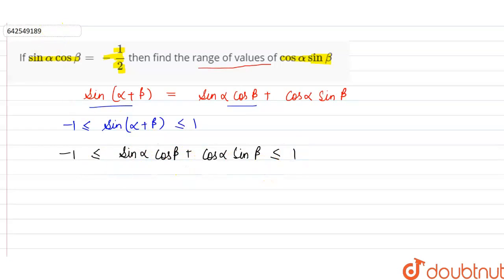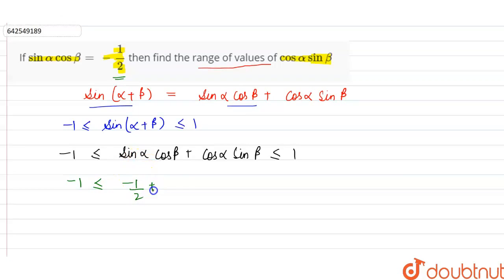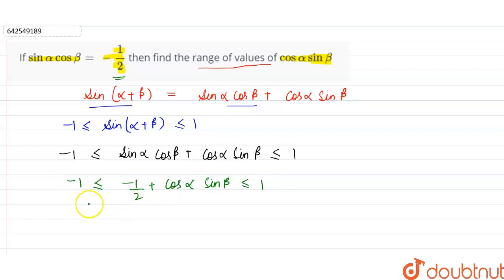We know the value of sin alpha cos beta is given to us, which is minus 1 by 2. So we can say: minus 1 is less than or equal to minus 1 by 2 plus cos alpha sin beta, which is less than or equal to 1. That means minus 1 by 2 plus cos alpha sin beta is greater than or equal to minus 1 but less than or equal to 1.